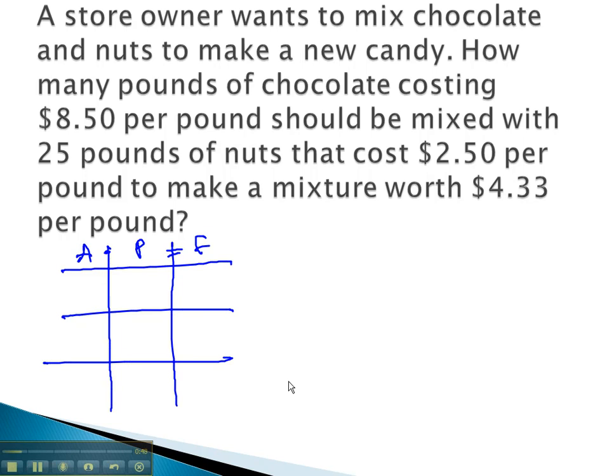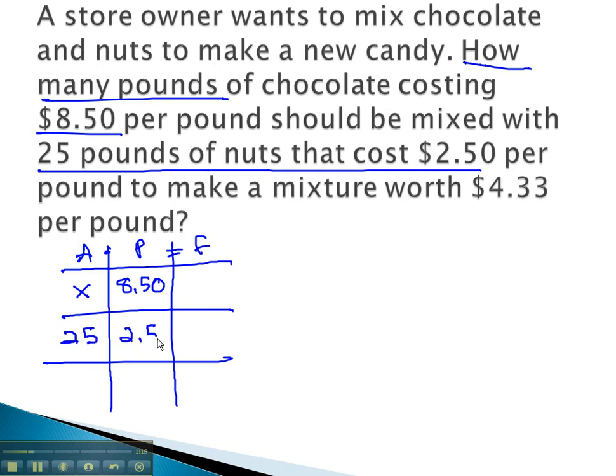We're told the store owner is mixing chocolate and nuts. We want to know how many pounds of chocolate that cost $8.50 per pound. That's our first solution. We don't know the amount, that's what we're looking for, but the price is $8.50 per pound. It's going to be mixed with 25 pounds of nuts that cost $2.50 per pound. The amount is now 25 pounds, and the price is $2.50.